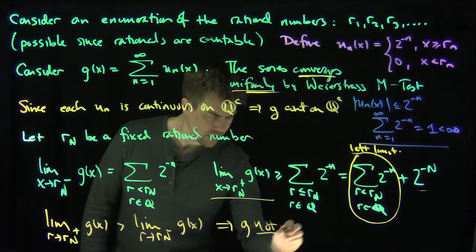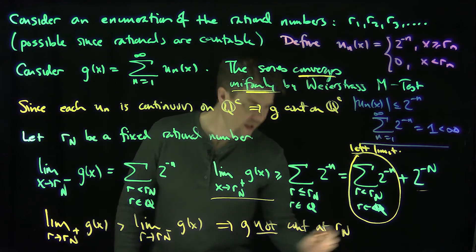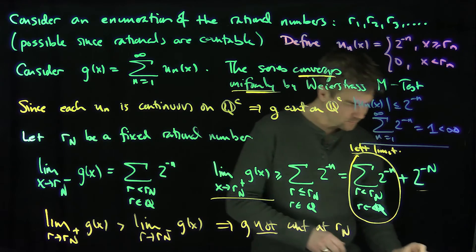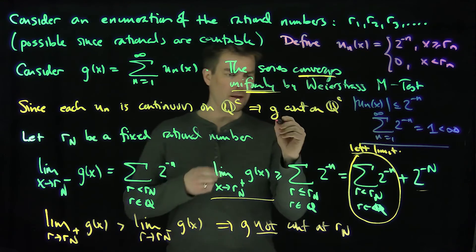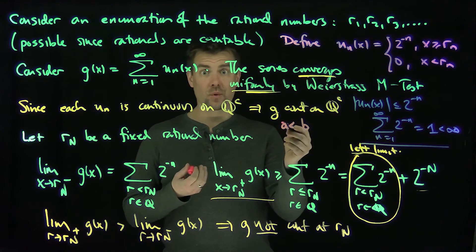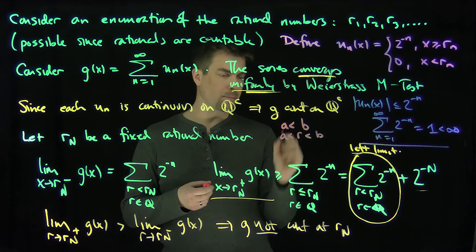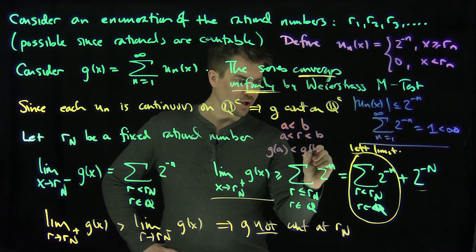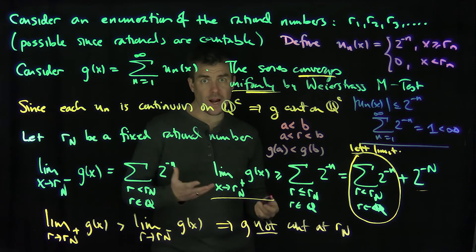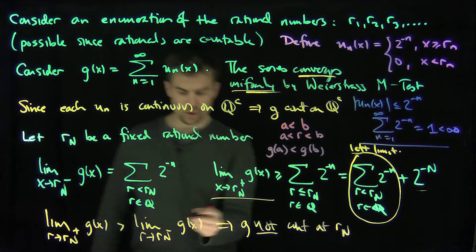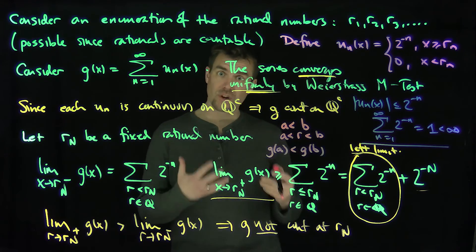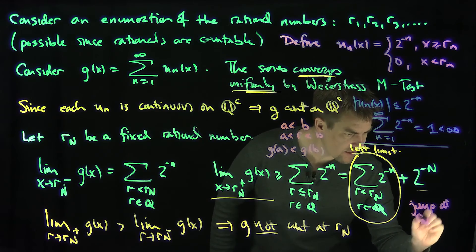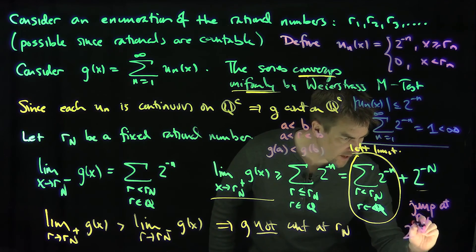The limit as x approaches r_n from the right of g of x is bigger than the limit as x approaches r_n from the left of g of x, so g is not continuous at r_n. Nonetheless, this function is clearly monotone: if a is less than b, we can squeeze a rational r between them with a < r < b, which automatically implies g of a is less than g of b. These are all jump discontinuities because monotone functions can only have jump discontinuities.